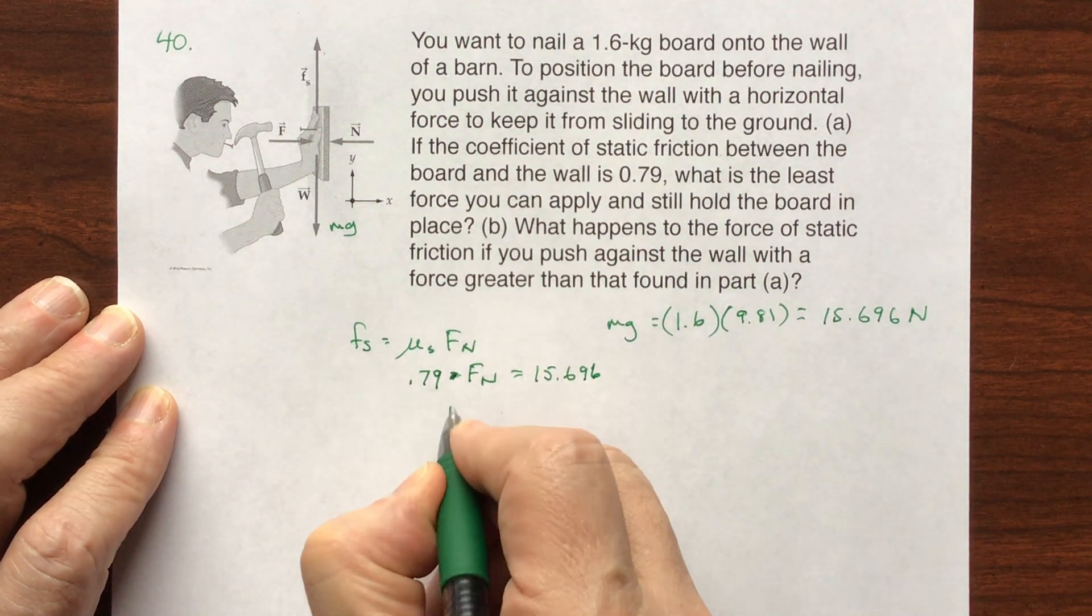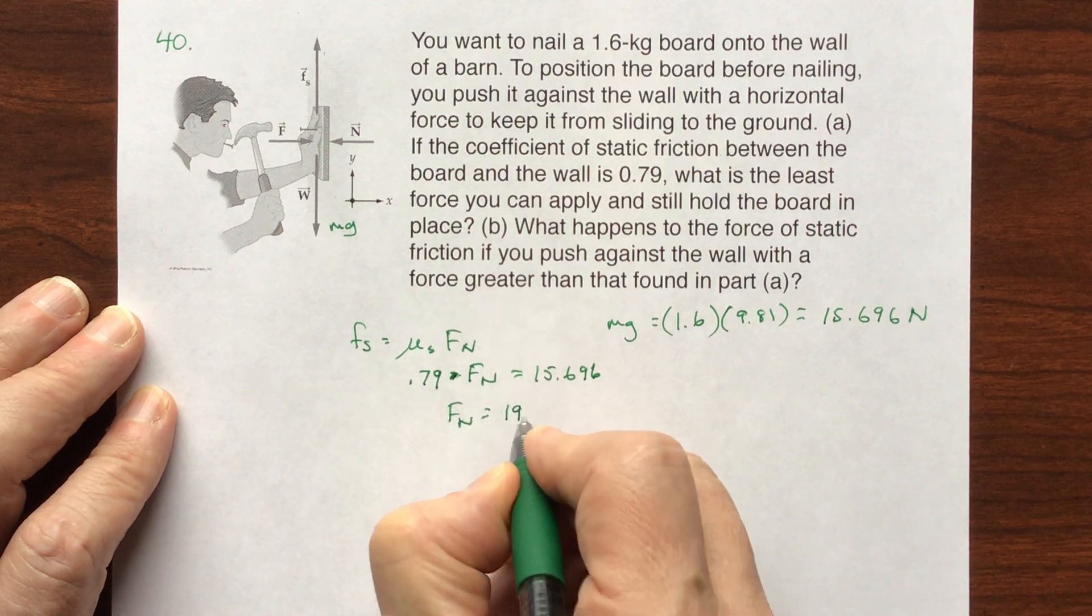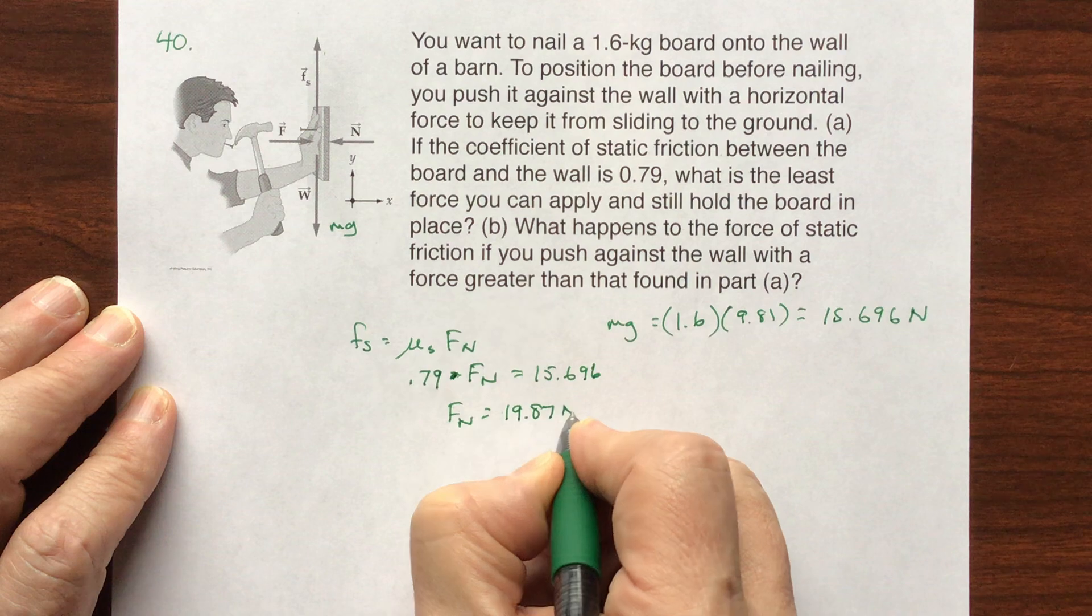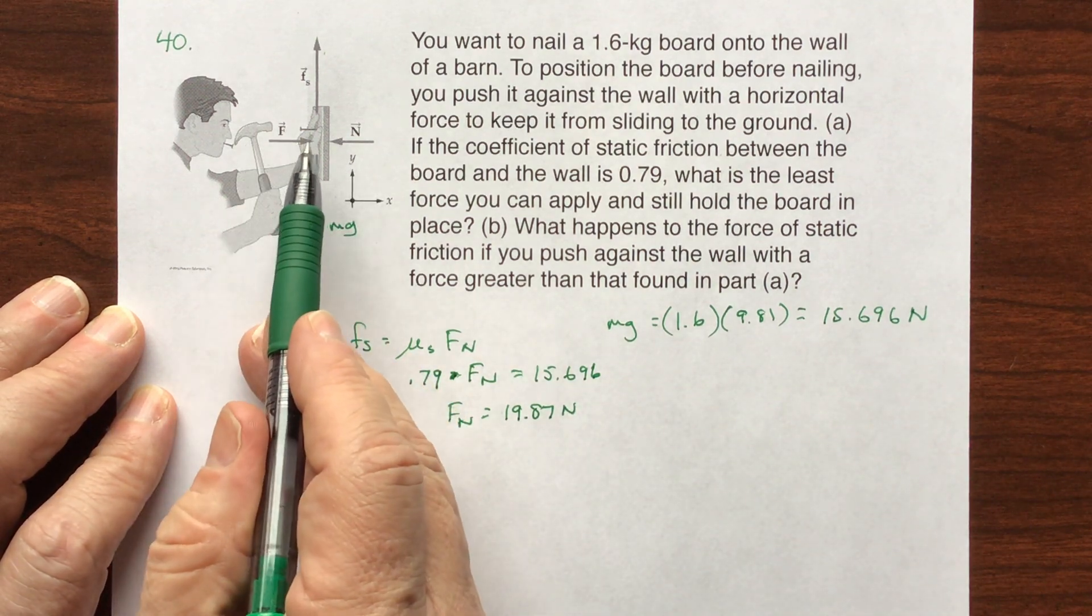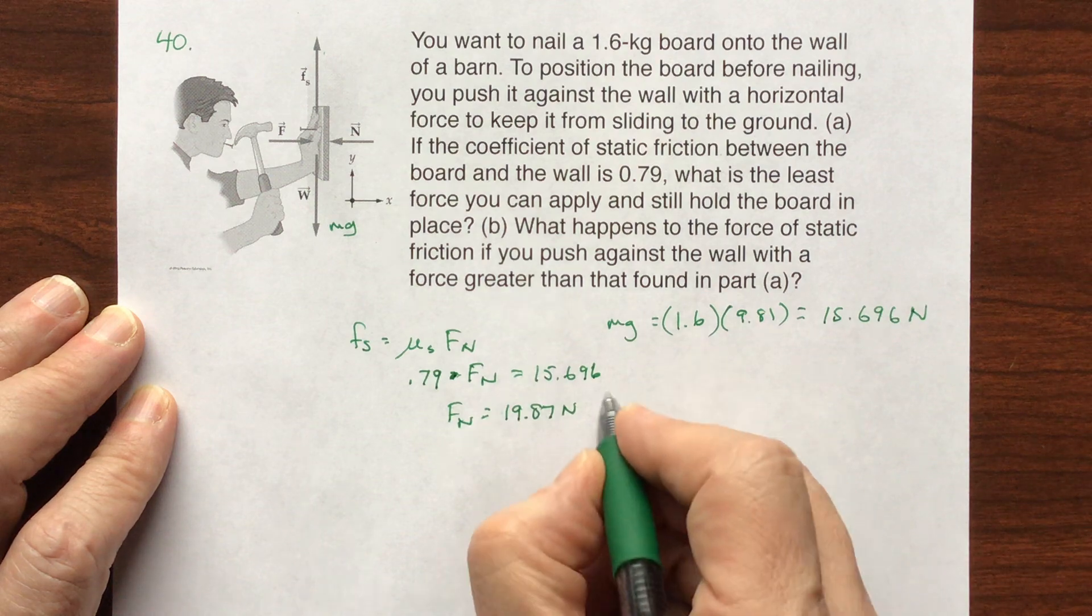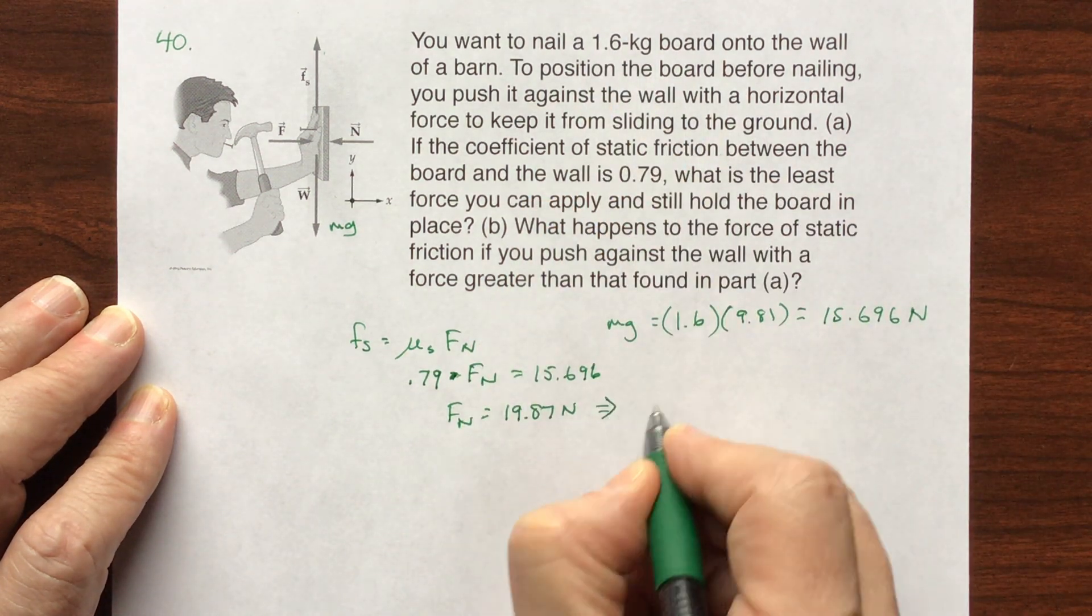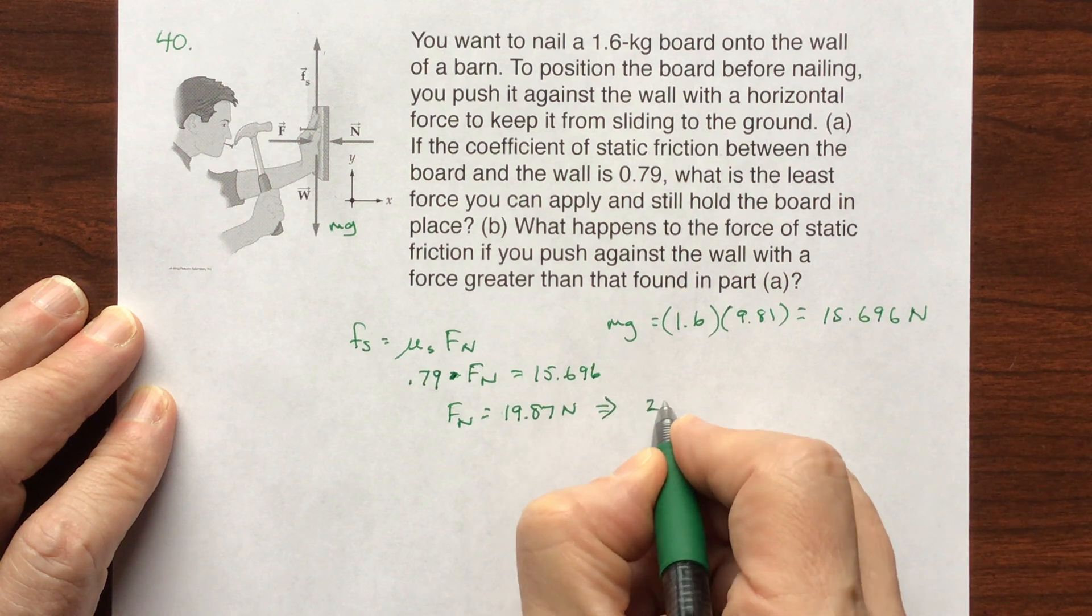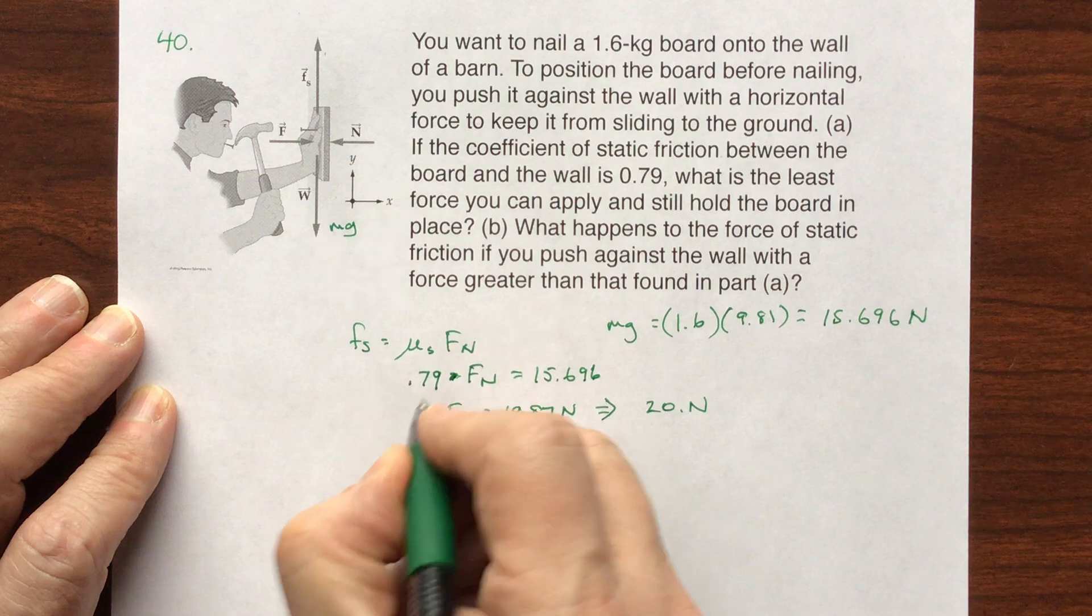I need to solve for fn. Divide that out, equals 19.87 newtons. So this force is 19.87 newtons. Looks like I have two significant digits, so this will be 20 newtons. So this was the part A.